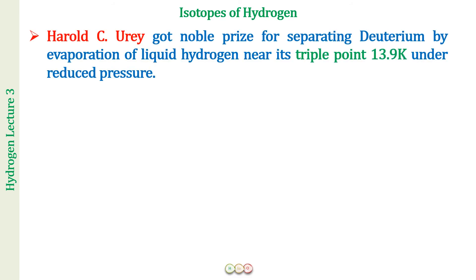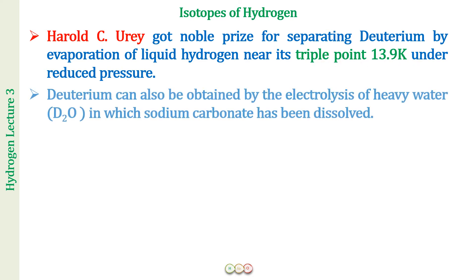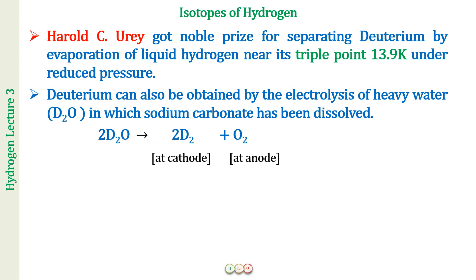We can separate deuterium from protium in a natural sample of hydrogen by physical means. Scientist Harold C. Urey won the Nobel Prize for first separating deuterium by evaporation of liquid hydrogen near its triple point at 13.9 Kelvin under reduced pressure. Another way to obtain deuterium is by electrolysis of heavy water D₂O in which sodium carbonate has been dissolved — D₂O on electrolysis liberates D₂ at the cathode and O₂ at the anode.